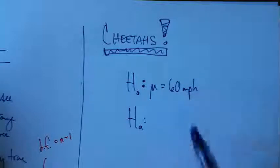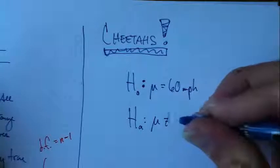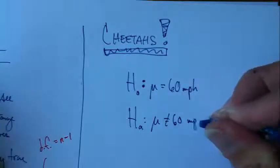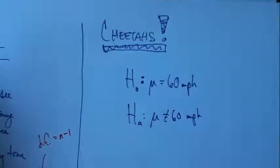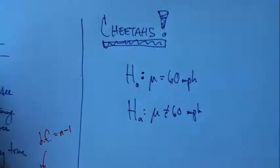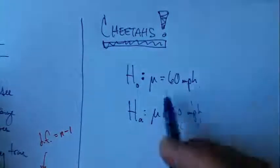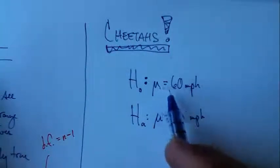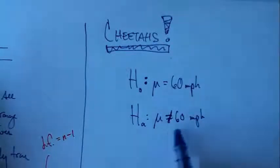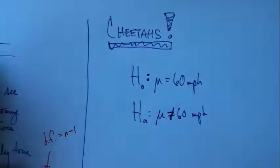Do you want to test if the mean is less than 60 miles per hour or greater than 60? Or what if you just wanted to see if it's different? Maybe the cheetahs have all been on some kind of new diet or something and so maybe you want to see if their top speed has just changed at all. You can do that too. Anything's okay. You just have to make sure that there's some kind of equality here in the null hypothesis. And then you'll have a less than or greater than or not equal to symbol here in the alternative hypothesis.